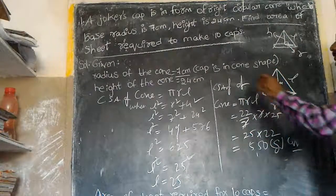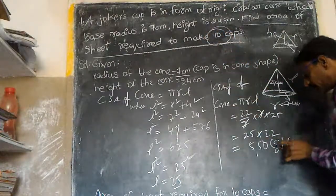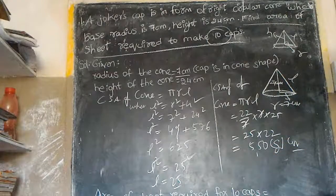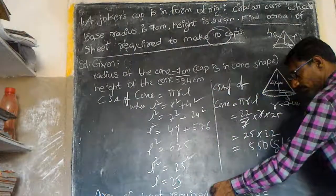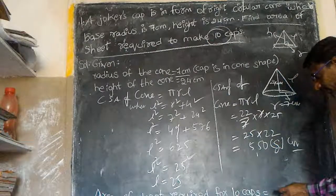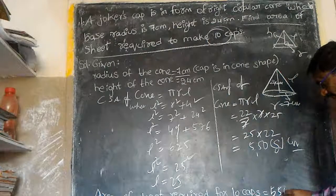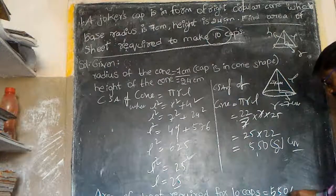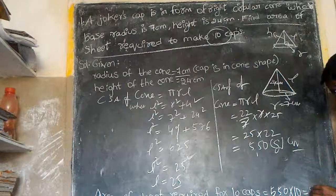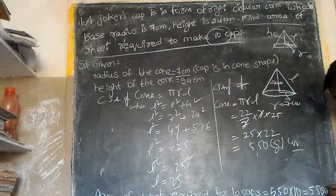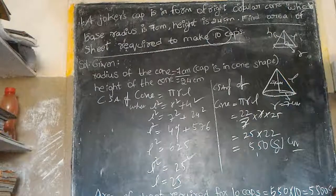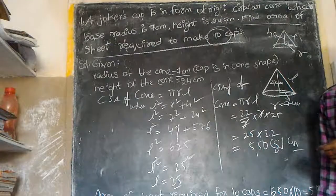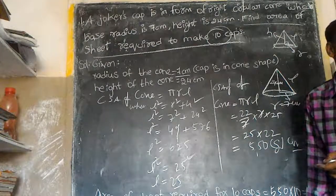What do you have to do? 10 caps. So the area of the sheet required for 10 caps is equal to 550 into 10, that is equal to 5500 square centimeters. With this sheet we can make 10 such caps.